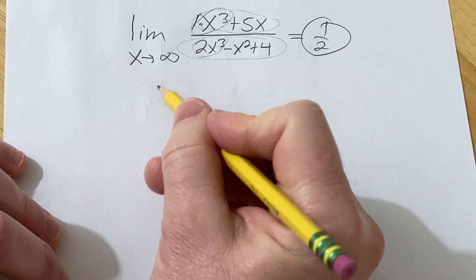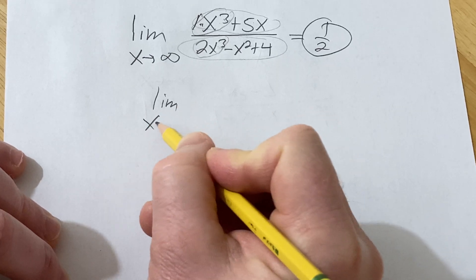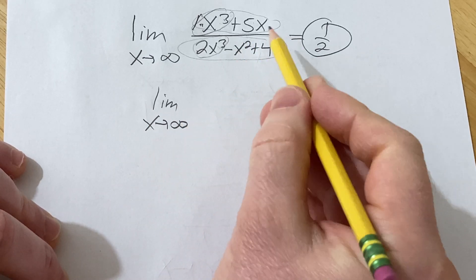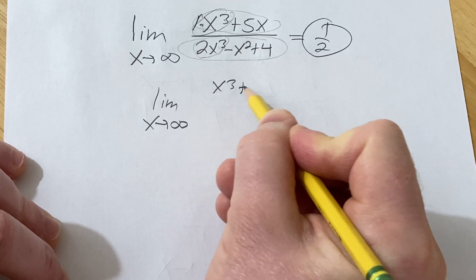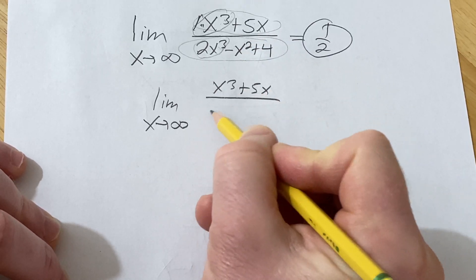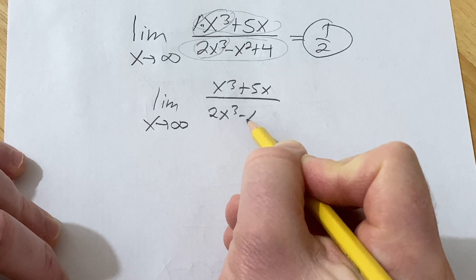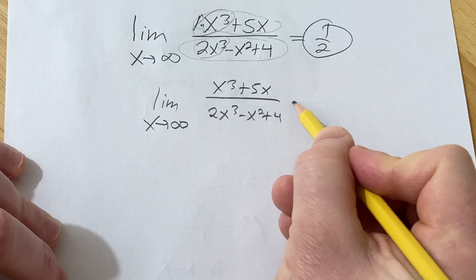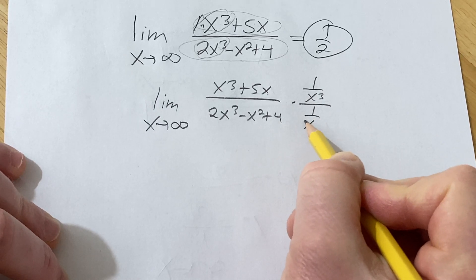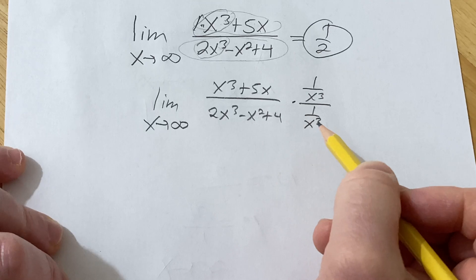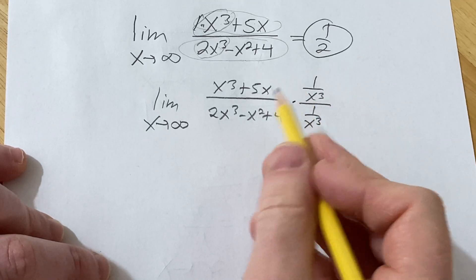Now if you want to show work, I'll show you really quick. What you could do is you could basically divide the numerator and the denominator by x cubed, which basically amounts to multiplying by 1. So let's do it.